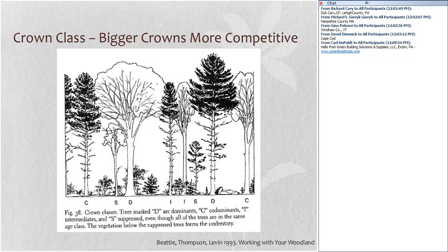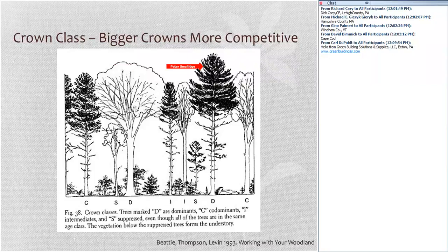One way to look at the context of neighboring trees is through the principle of crown class. Crown class is the height of a tree relative to its neighbors. We have trees in the upper crown class whose crowns are fully exposed to sunlight, and trees in the lower crown class where there is limited access to direct sunlight — perhaps only on the very top of that tree. The shape of the crown is largely a reflection of the crown position of that tree.